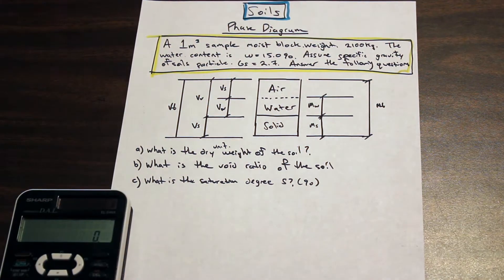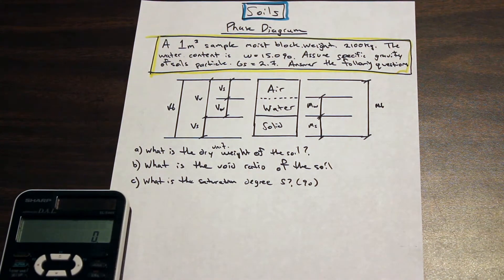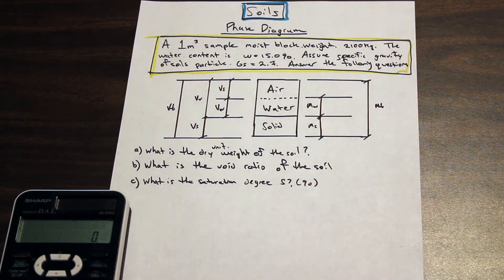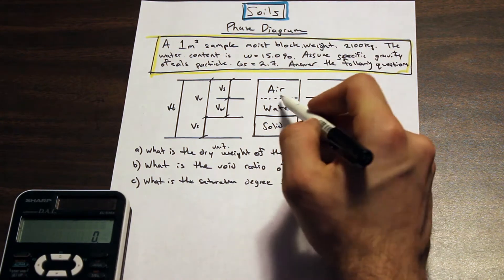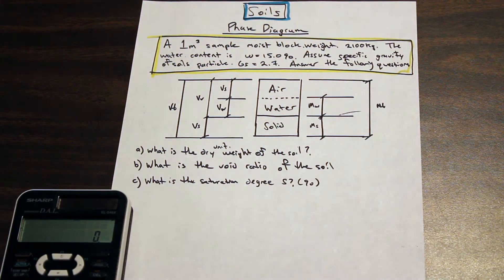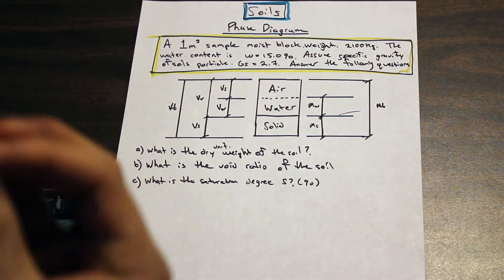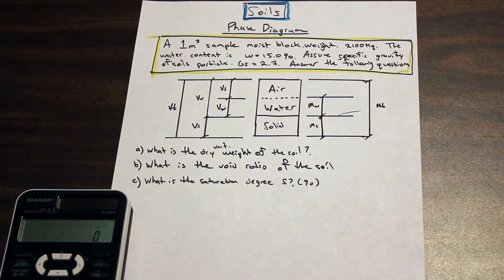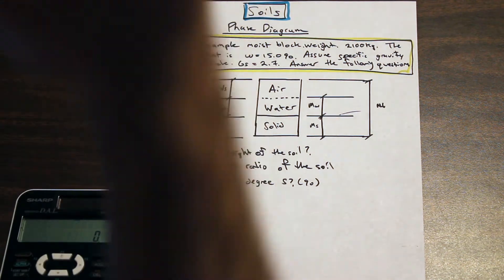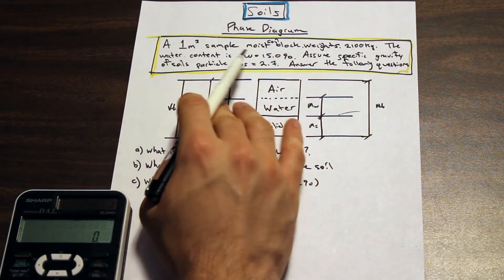Hey guys, Fred here, welcome back to AF Math and Engineering. We are doing a video on soils — geotechnical engineering. This is going to be the first of many videos on this subject. So we have what's called a phase diagram here. We've taken a soil sample and broken it up into its constituent parts: air, water, and soil. Soil is made up of three components — air voids trapped inside, water that's mixed in, and the solids. They all have different densities and are mixed up as a homogeneous mixture, but we need to separate them into their components so that we can analyze it.